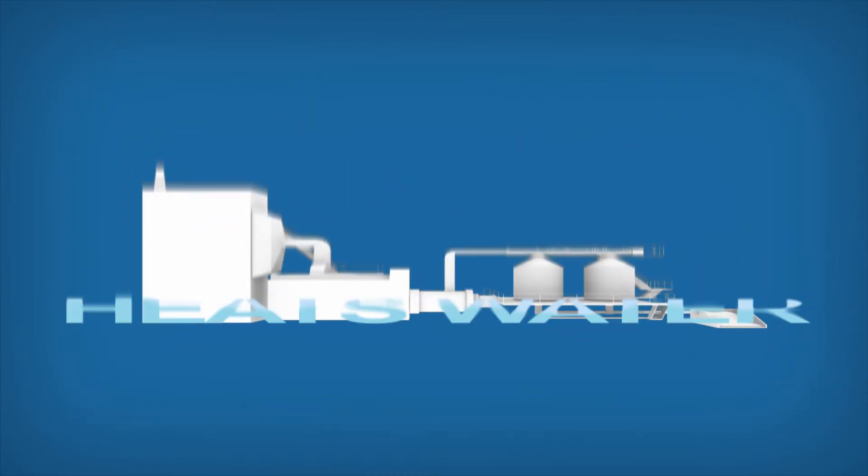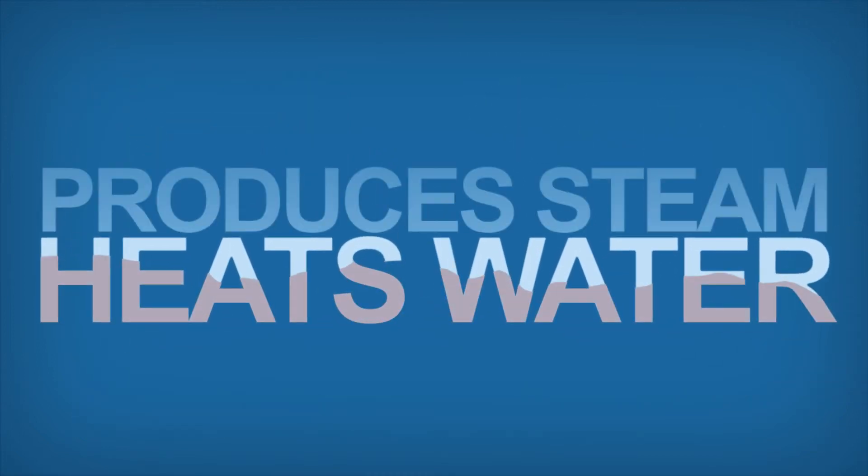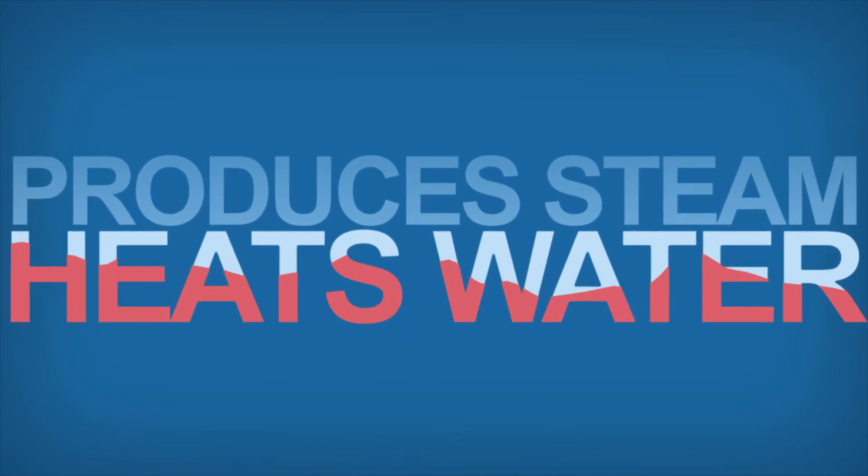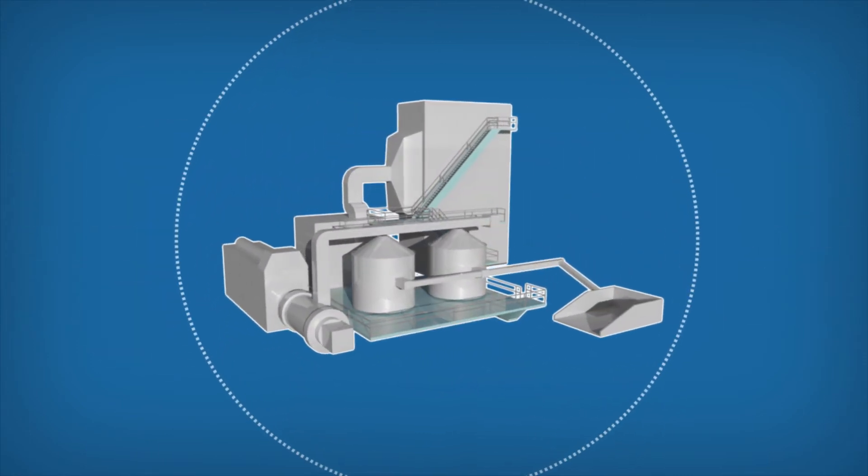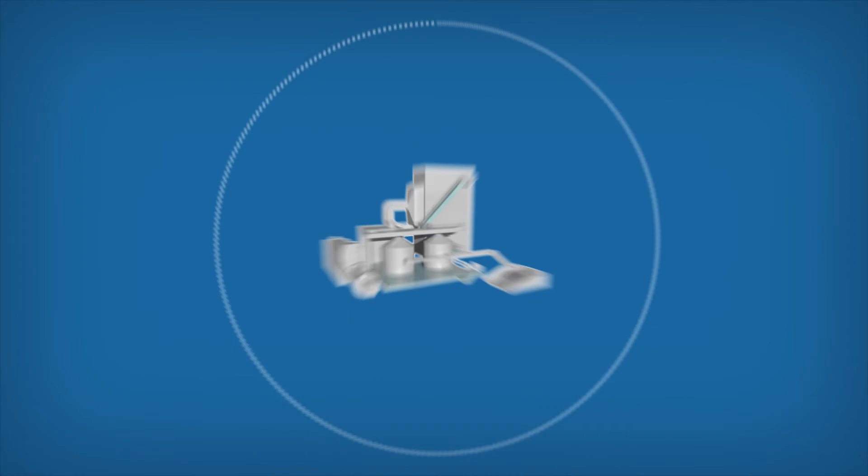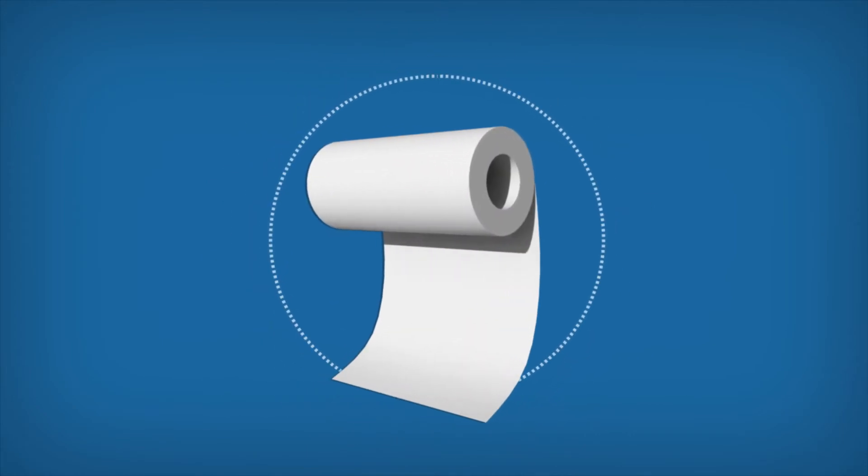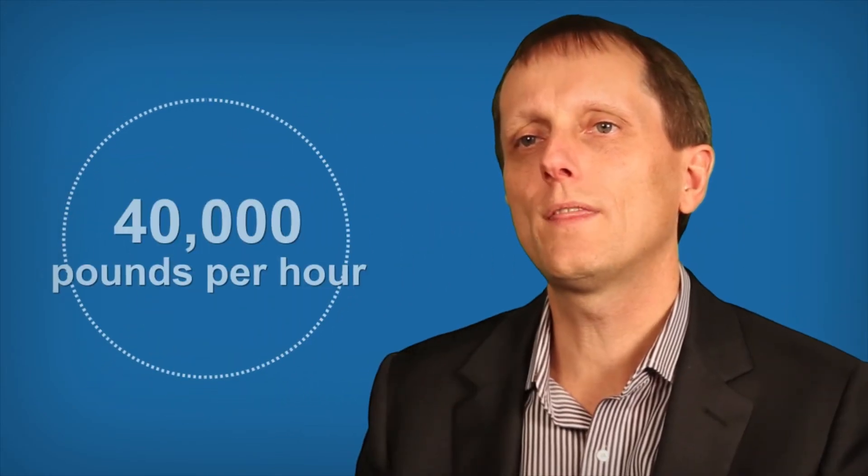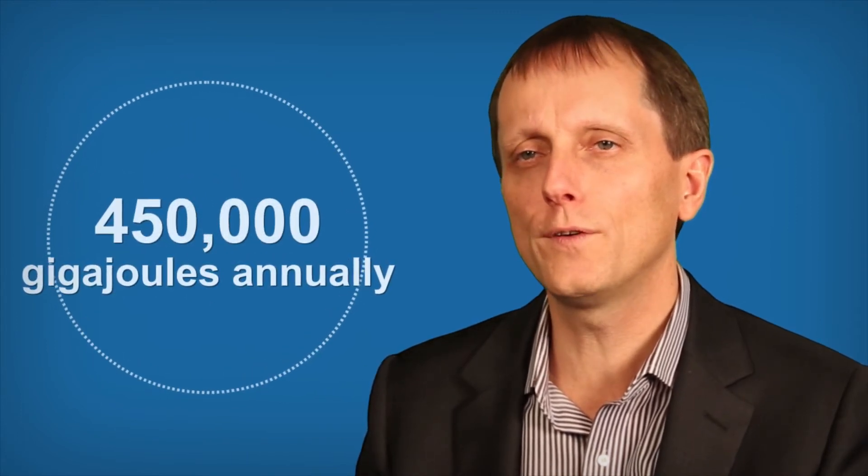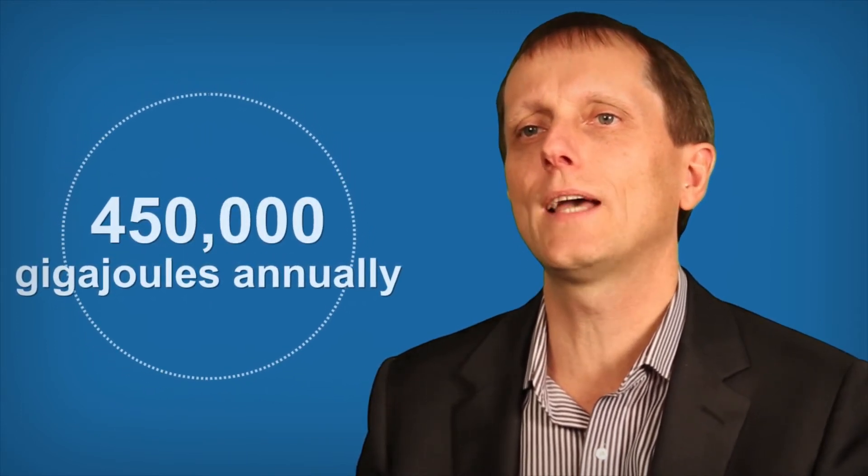This combustion process heats water and produces steam. The steam is used for multiple purposes around the plant, but mostly to dry the tissue web as it is being made. The technology produces more than 40,000 pounds per hour of steam and displaces approximately 450,000 gigajoules of natural gas annually.